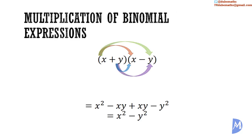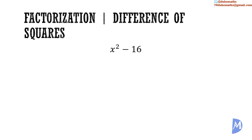Remembering that x minus y, multiplied by x plus y, is equal to x squared minus y squared. And more importantly, that x squared minus y squared is equal to x plus y, multiplied by x minus y. It follows that x squared minus 16, which is equal to x squared minus 4 squared, is equal to x minus 4, multiplied by x plus 4.